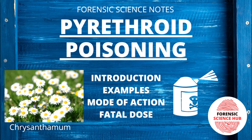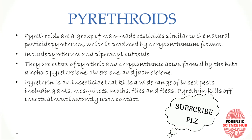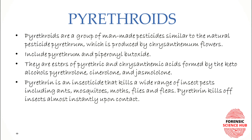Pyrethroids are a group of man-made pesticides that are similar to the natural pesticide pyrethrum, which is produced by chrysanthemum flowers. Pyrethrum is modified in order to make pyrethroids. The natural pesticides include pyrethrum and piperonyl butoxide.